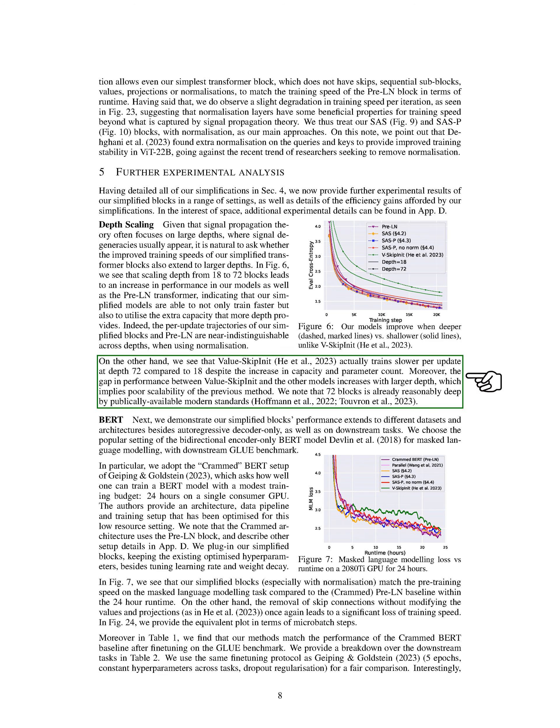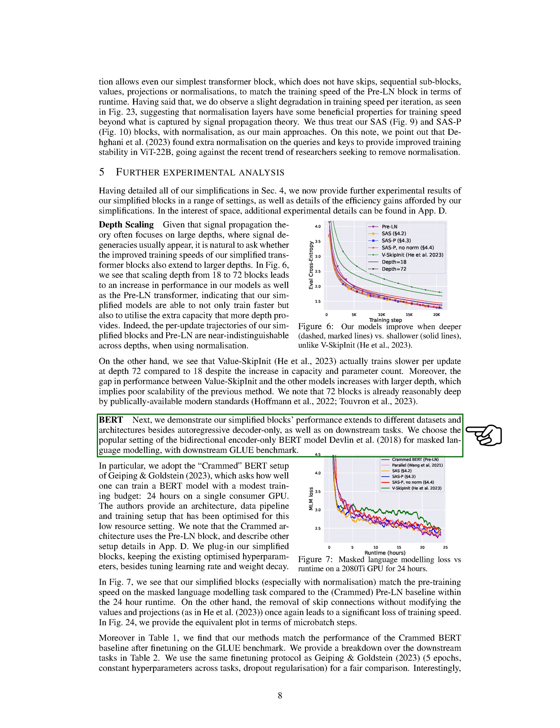However, the ValueSkipInit model trains slower at a depth of 72 compared to 18, despite having more capacity and parameters, indicating that the previous method doesn't scale well with larger depth. Next, we tested our simplified blocks on different datasets and architectures, including the popular bidirectional encoder-only BERT model for masked language modeling. We used the crammed BERT setup, which is designed to train a BERT model efficiently on a single consumer GPU within 24 hours. We replaced the pre-LN block in the crammed architecture with our simplified blocks, and kept the existing optimized hyperparameters, except for tuning the learning rate and weight decay.